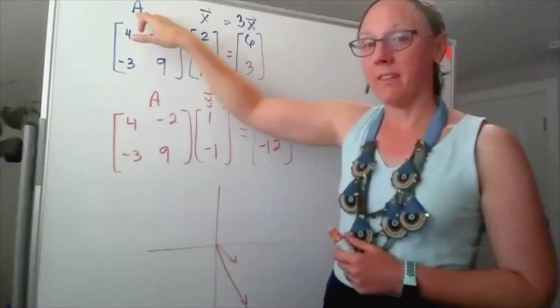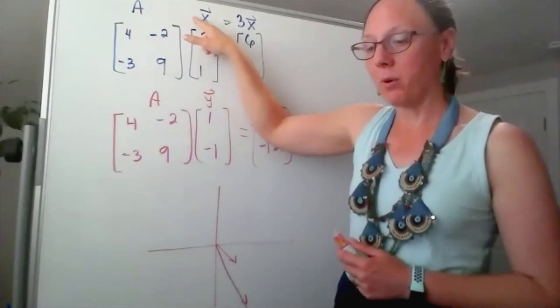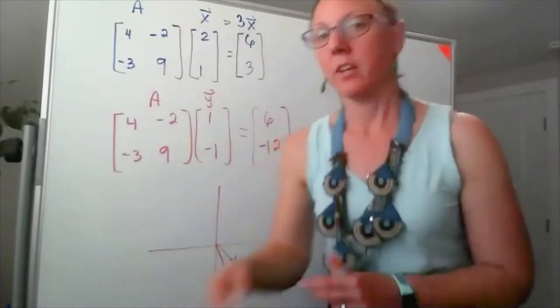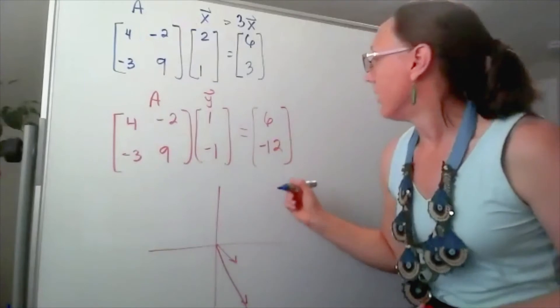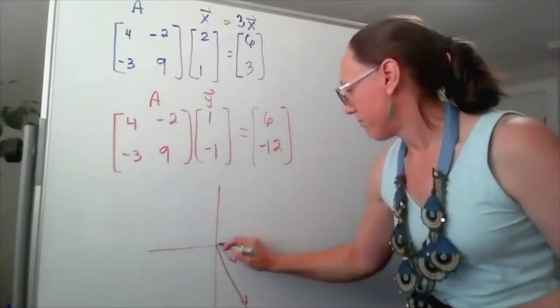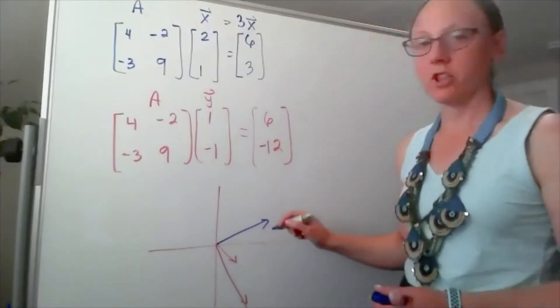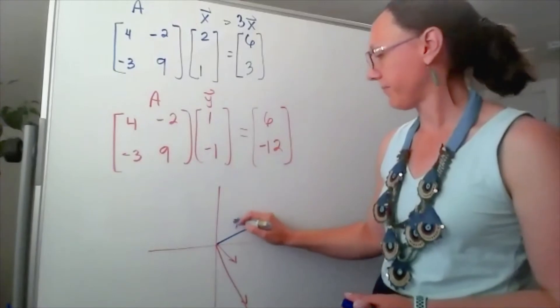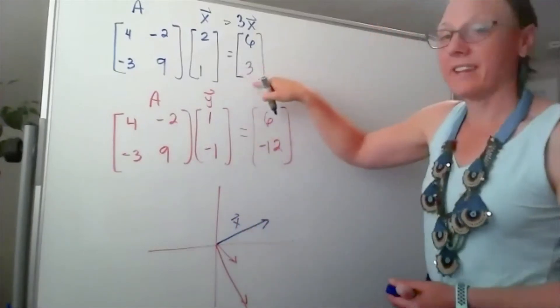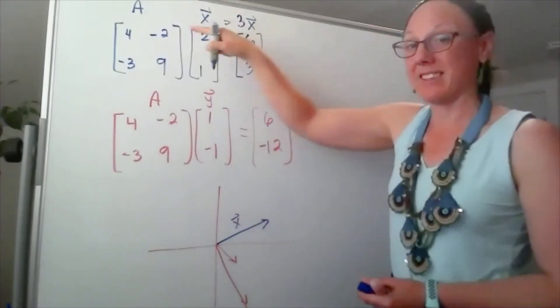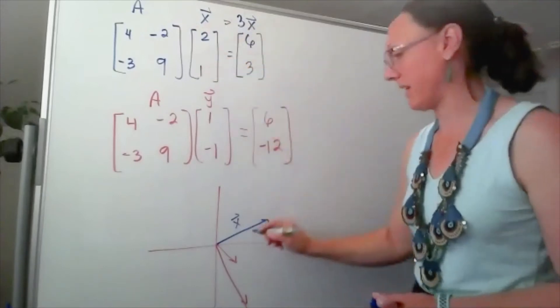I multiplied the matrix by a very particular vector [2, 1], the result was that I ended up with a vector that was exactly three times the length of what I started with.